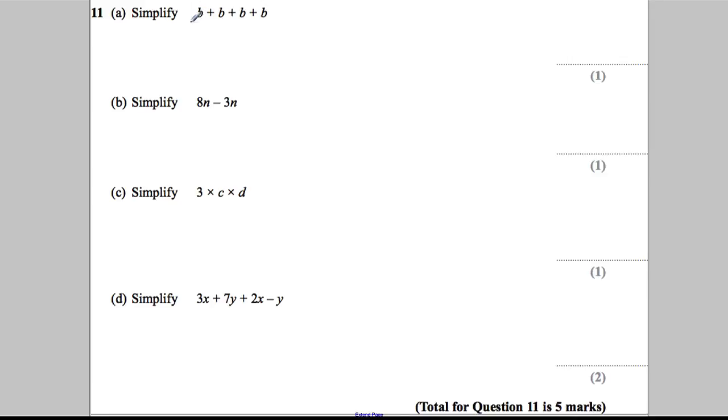Question 11. We've got B, add another B is 2B, add another B is 3B and another B is 4B.